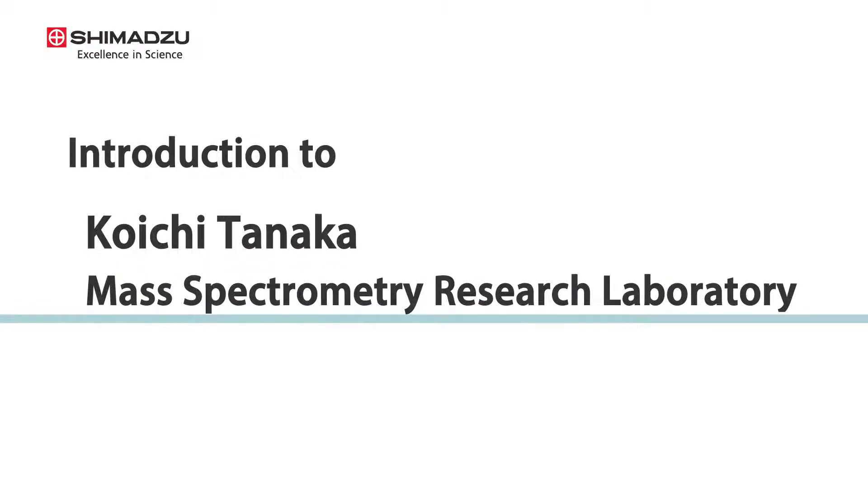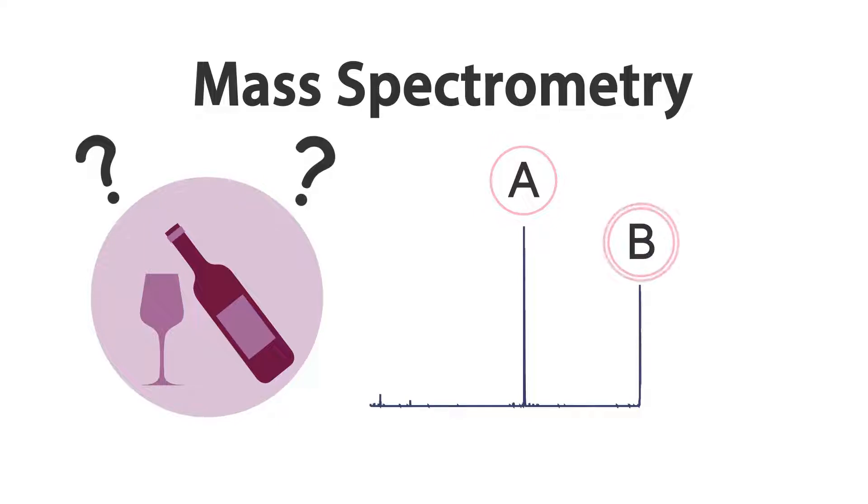Introduction to Koichi Tanaka Mass Spectrometry Research Laboratory. Mass spectrometry is an analytical technique that can estimate the components in a sample by measuring the mass of molecules.